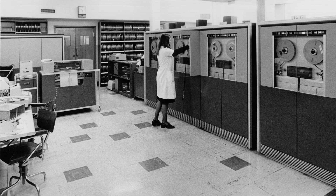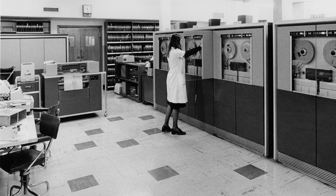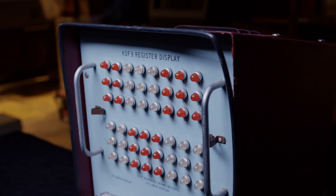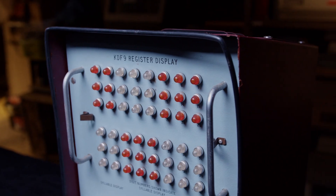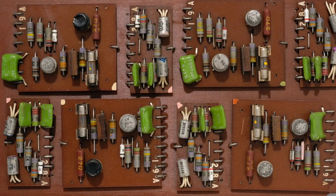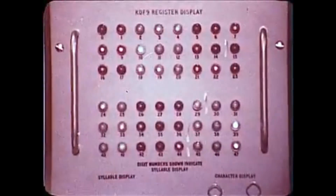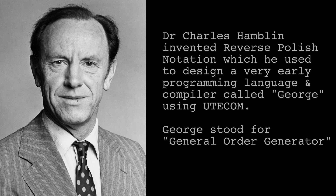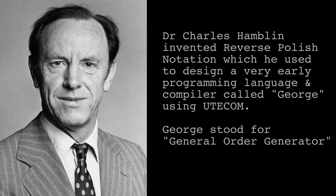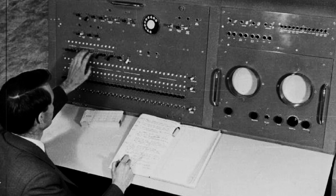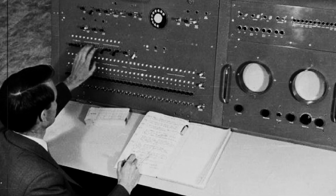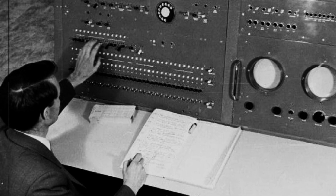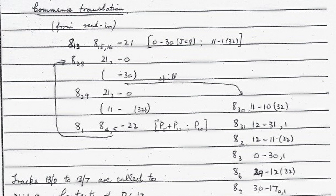In the 1960s, the University of Sydney decided that it needed to update Celiac and decided to replace it with an English Electric KDF9. The KDF9 was an interesting machine because it was the first British solid-state computer, which actually had some influence from Australia. In 1957, Charles Hamblin, a professor of philosophy at the New South Wales University of Technology using Uticom, designed one of the world's first programming languages, later called George, which introduced reverse Polish notation.